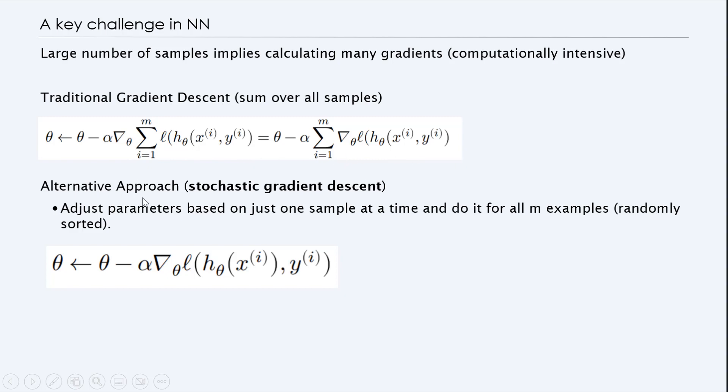So we get something like this. And the alternative approach is a method called stochastic gradient descent. So what we do is we adjust the parameters based on just one sample at a time, not all of them at a time. So we just take one sample and do it for all samples randomly sorted. So this is the idea of stochastic gradient descent. So this way we don't have to compute a big sum here in order to get there.